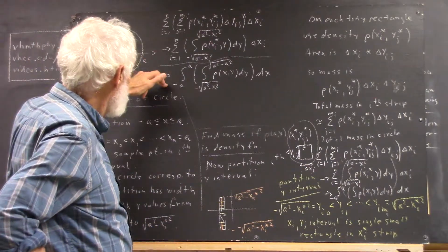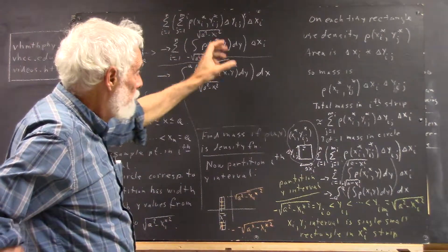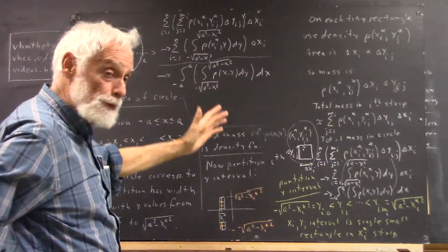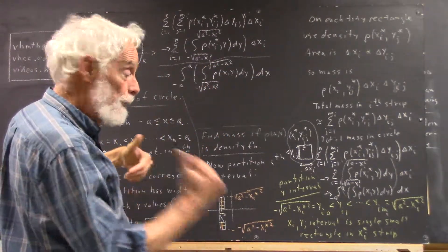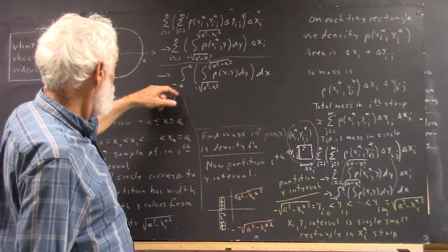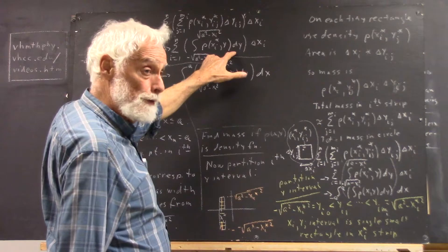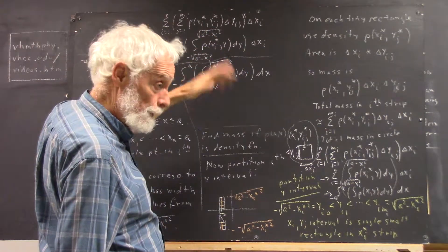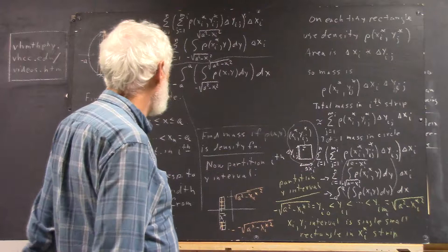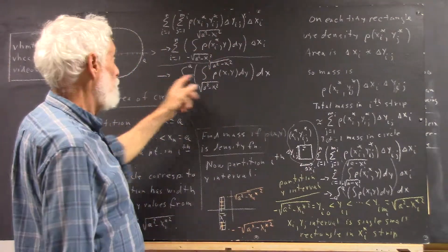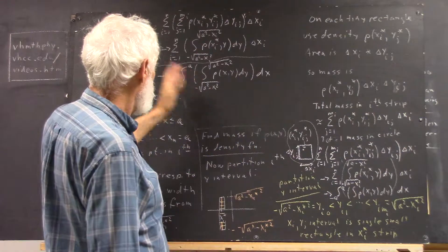As we approach the integral here, as we refine the partition of our x-interval from negative a to a, we get the integral from negative a to a with respect to x of this expression. But now our xi star becomes just plain old x, it becomes continuous, and the xi's here become just plain old x's. And here is our integral.